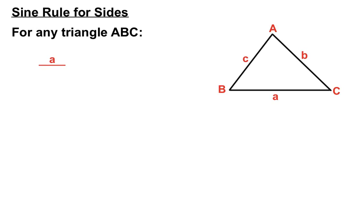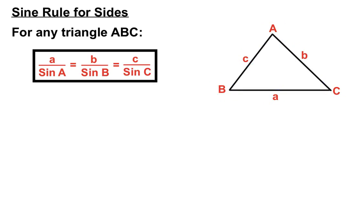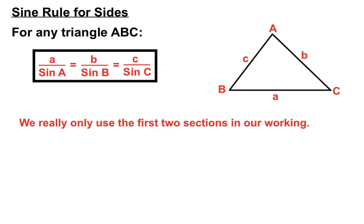For any triangle ABC, the Sine Rule states: side a over the sine of its angle equals side b over the sine of its opposite angle, and also side c over the sine of its opposite angle. So the ratio of each side over the sine of its opposite angle is equal for all three pairs.